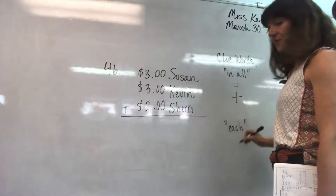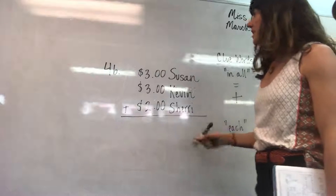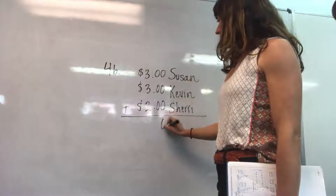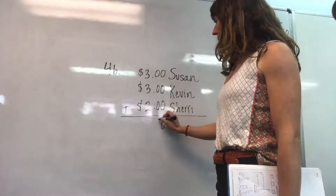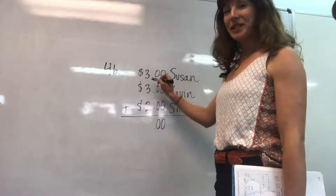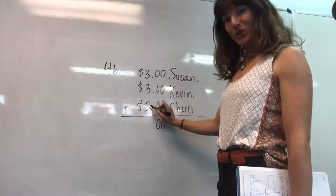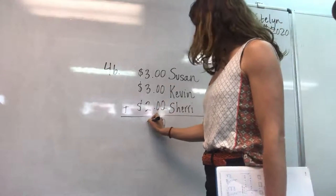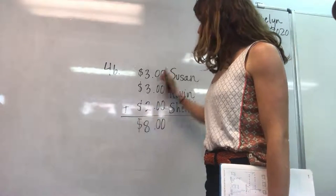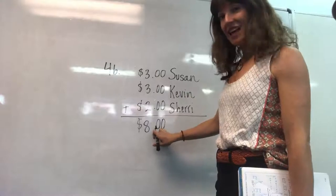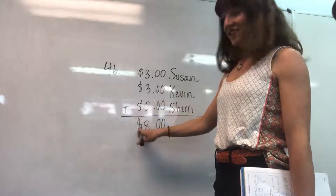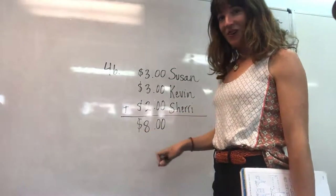Each. That's a clue word. All right. Zero. Zero. Three plus three is six. And six plus two is eight. Eight. Make sure that your decimal point lines up and your dollar signs line up.